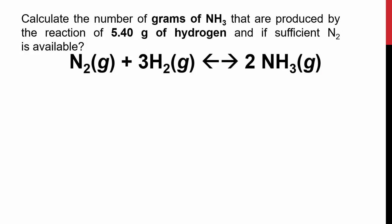So here's an example where we're going to calculate the number of grams of NH3 that are produced by the reaction of 5.40 g of hydrogen, if sufficient N2 is available. The equation is N2(g) + 3H2(g) ↔ 2NH3(g). So you notice that we have to convert one substance into a completely different substance in this chemical reaction, which should be triggering that stoichiometric calculation. However, before we could do stoichiometry, we need moles, and we don't have them yet.